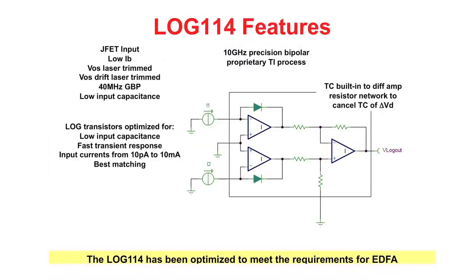The LOG114 has been optimized to have rise and fall times of less than a microsecond for this very demanding application. The LOG114 is manufactured on TI's proprietary complementary 10 gigahertz high performance bipolar process. This process was optimized for fast, high speed analog circuits such as operational amplifiers and the log amp. Features of the LOG114's input amplifiers critical to the performance in EDFAs and variable optical attenuators are its combination of very low input bias current, low offset voltage, low offset voltage drift, and low input capacitance.